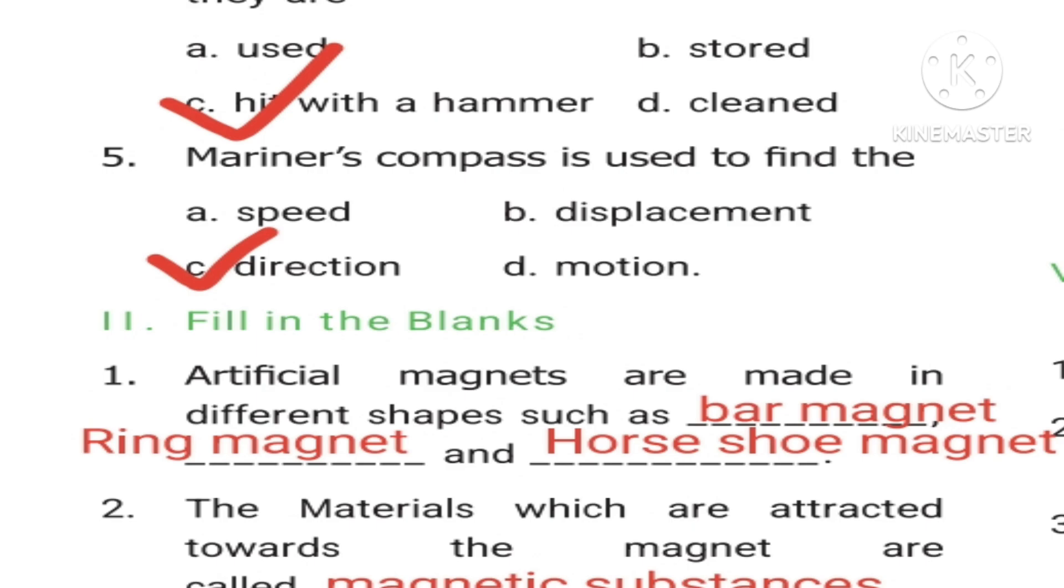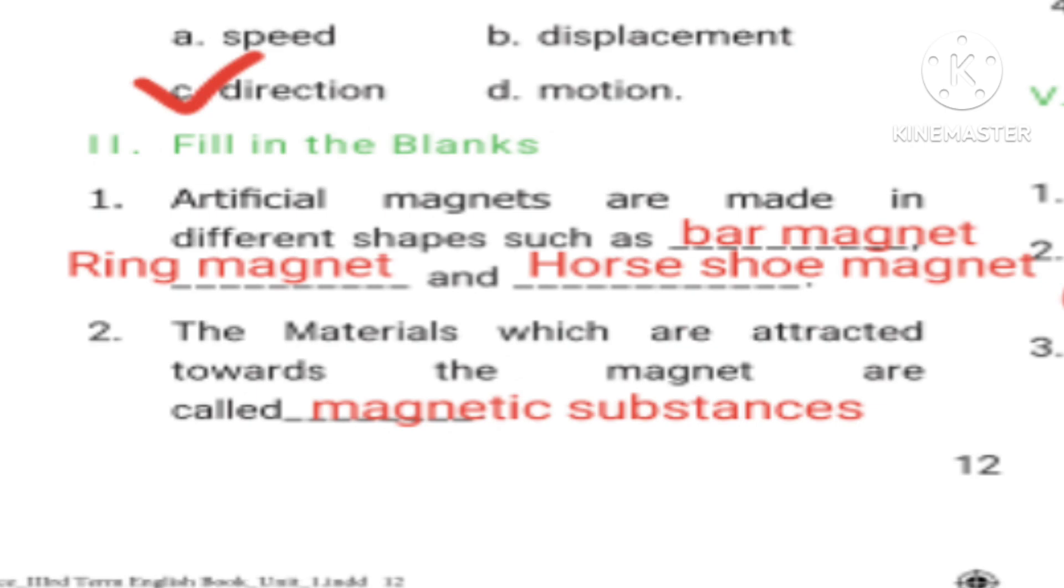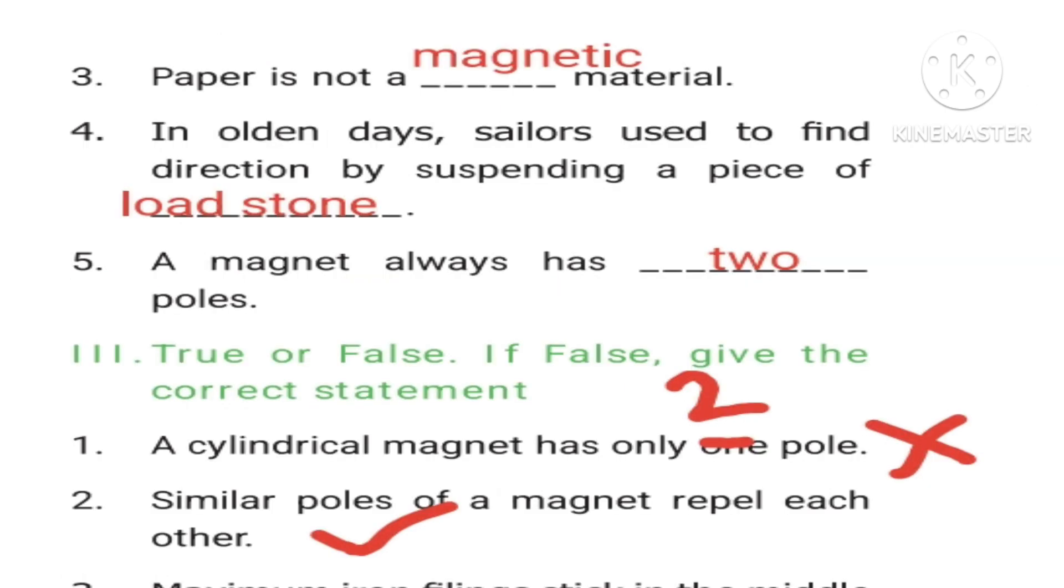Second question: The materials which are attracted towards the magnet are called dash - magnetic substances. Third question: Paper is not a dash material - magnetic material. Fourth question: In olden days, sailors used to find direction by suspending a piece of dash - lodestone. Fifth question: A magnet always has dash poles - two poles.